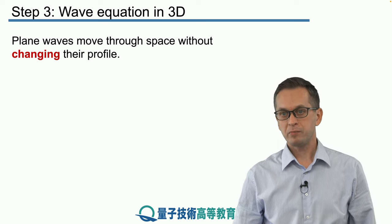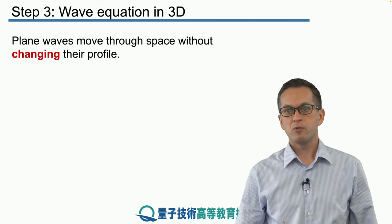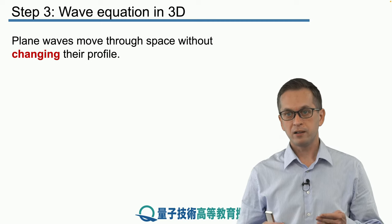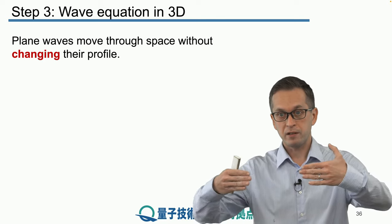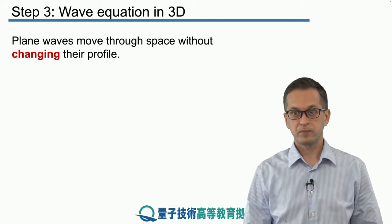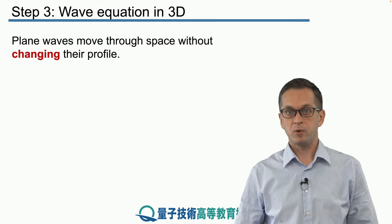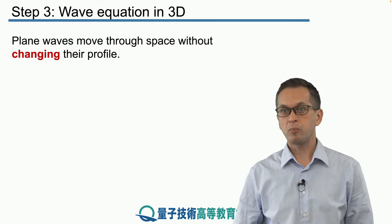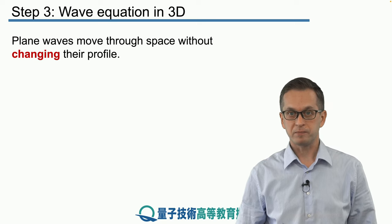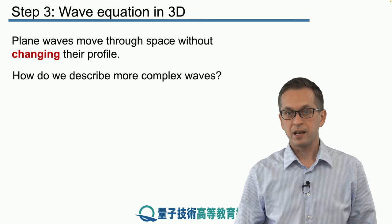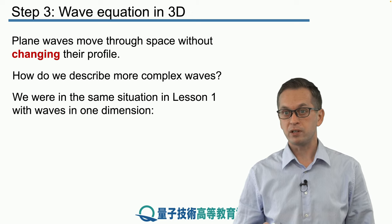The example we considered in the form of plane waves was a very simple wave where the profile of the wave was not changing in time — it was just a plane propagating through three-dimensional space. In that sense it's a very simple wave, but there are more complex waves for sure. So how do we describe such waves? The answer is with a wave equation, like we saw in the first lesson.